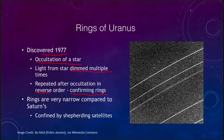As the star was passing, the rings would pass in front of it, dimming the light a little bit as each ring passed in turn. On the other side, the rings passed in the opposite order. The rings of Uranus are extremely narrow compared to the rings of Saturn.